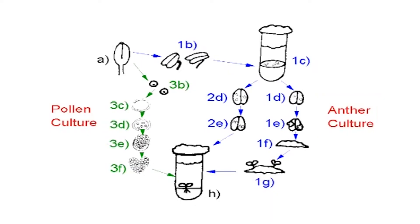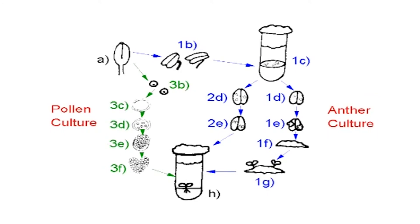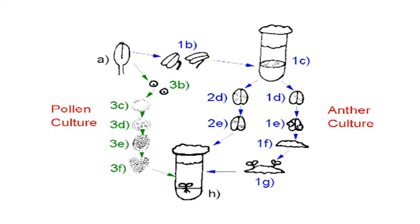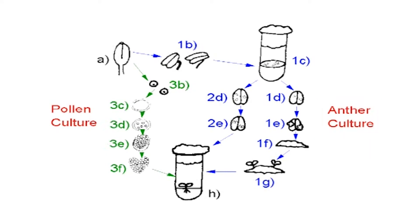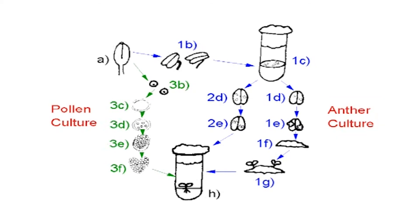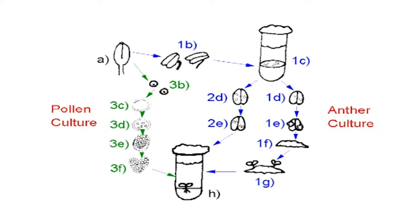Having learnt about anther and pollen culture, let us see the advantages of pollen culture over anther culture. In the course of anther culture, there is constantly the probability that somatic cells of the anther, which are diploid, will also react to culture conditions and consequently yield undesirable diploid calli or plantlets. At times, the growth of microspores inside the anther may be disturbed due to growth-inhibiting elements seeping out of the anther wall into contact with the nutrient medium.